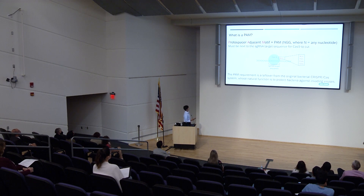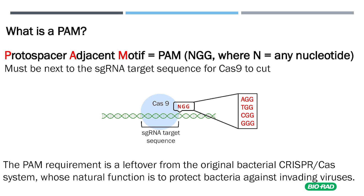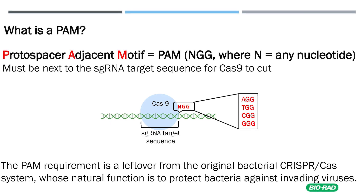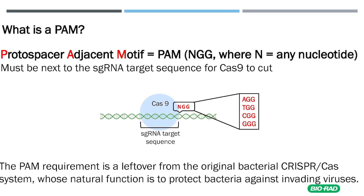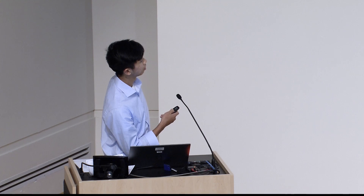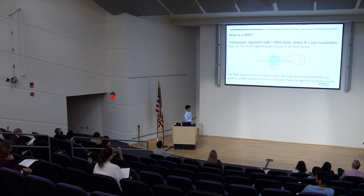What is a PAM? PAM stands for protospacer adjacent motif. It is basically a three-nucleotide length sequence, and as mentioned on the previous slide, it directs the Cas9 to where it should cut. Here are the possible PAM sequences.